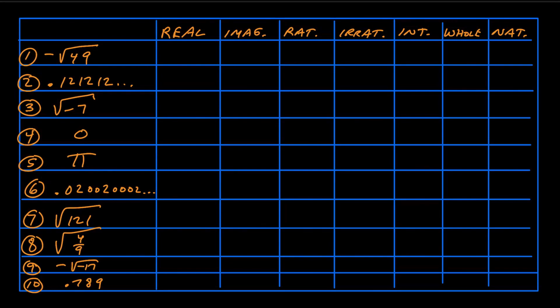In this video, you're going to learn how to classify numbers, whether they're real or imaginary, rational or irrational, if they're integers, whole numbers, or natural numbers. Take this like you would take a quiz — go ahead and take a screenshot or write these numbers down and see which categories they fall into, keeping in mind that they could fall into more than one category.